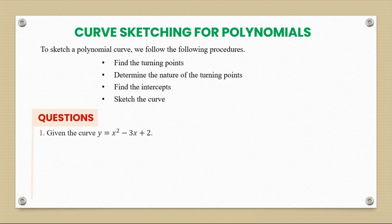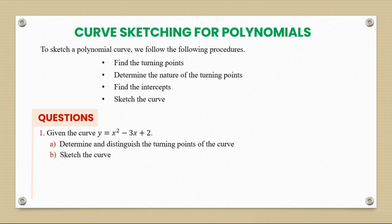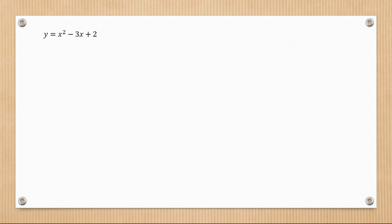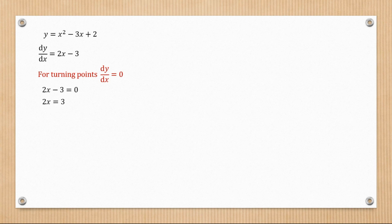First question: given the curve y = x² - 3x + 2, part (a) determine and distinguish the turning points, and part (b) sketch the curve. Differentiating gives dy/dx = 2x - 3. For turning points, dy/dx = 0, so 2x = 3, giving x = 3/2.